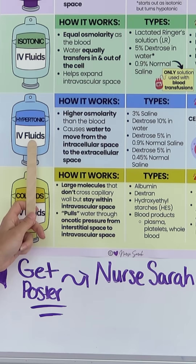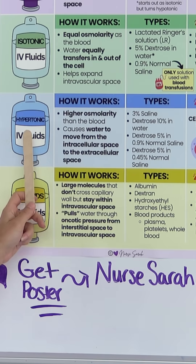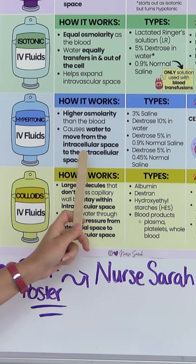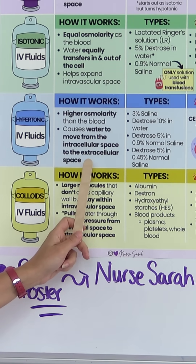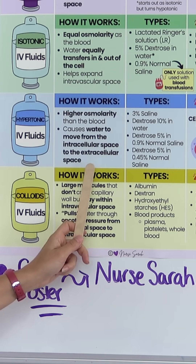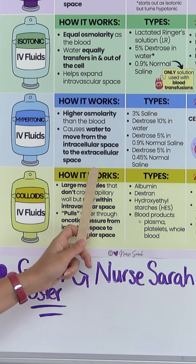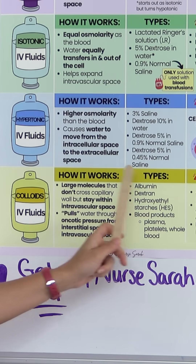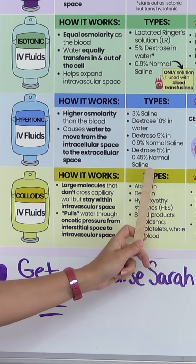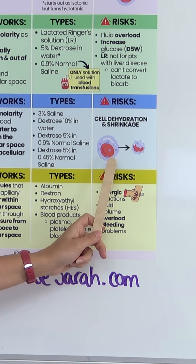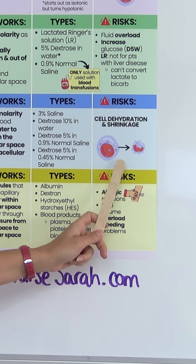Hypertonic IV fluids — hyper means high, so they have a higher osmolarity than the blood. This causes water to move from the intracellular space to the extracellular space. Here are the types. Risks include cell dehydration and shrinkage.